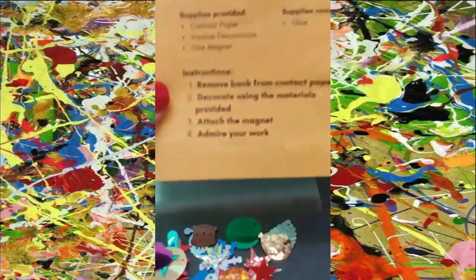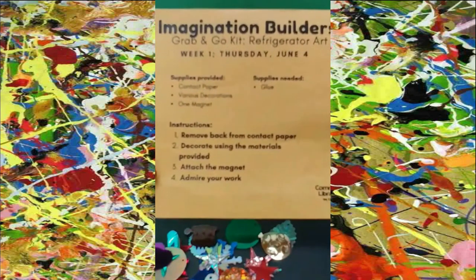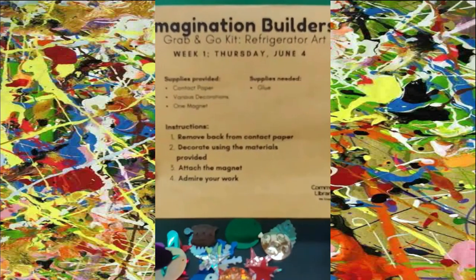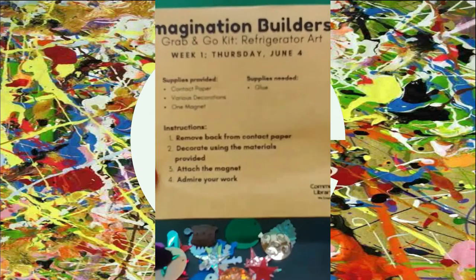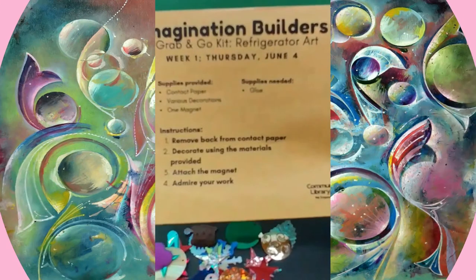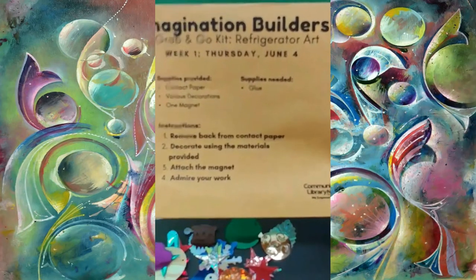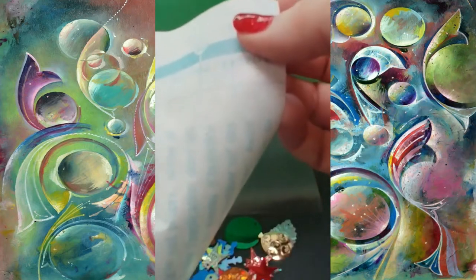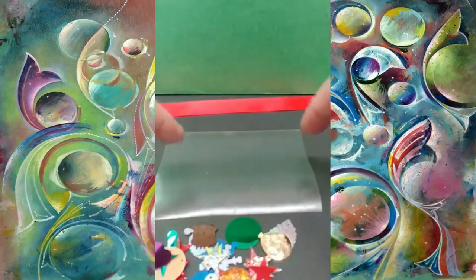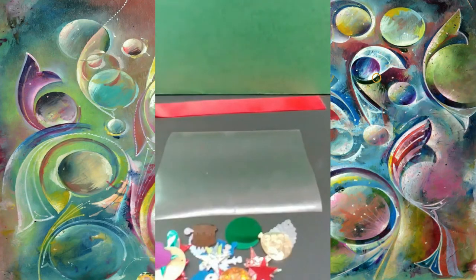In your grab-and-go comes a piece of paper that tells you the supplies provided: the contact paper, various decorations, including a piece of ribbon, and one magnet. You're going to need some glue to glue on that magnet. You're going to remove the back piece of paper off of your contact paper, and then you're going to lay it down on your workspace face up.